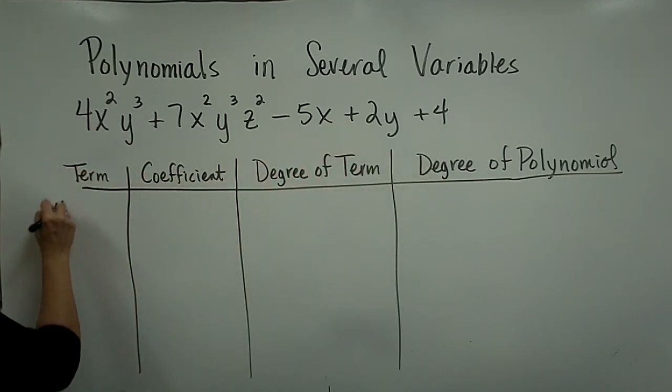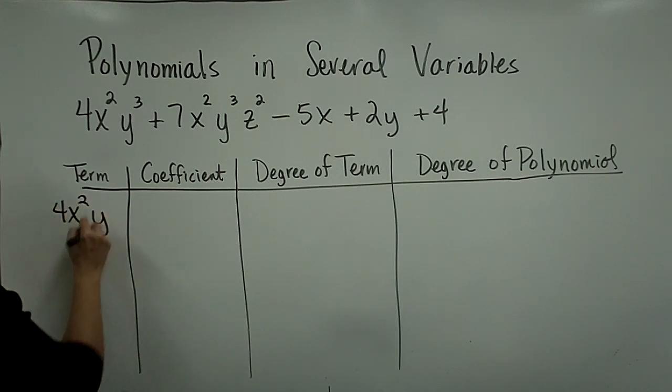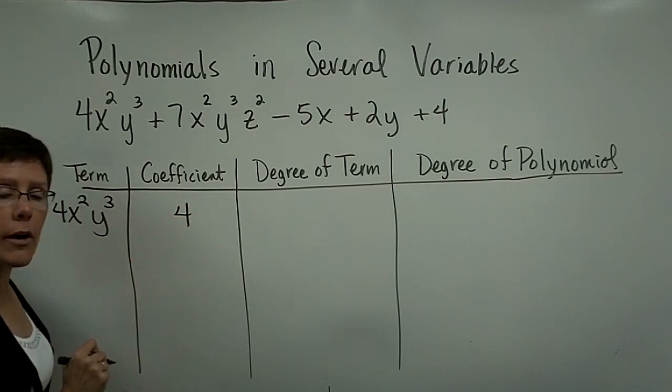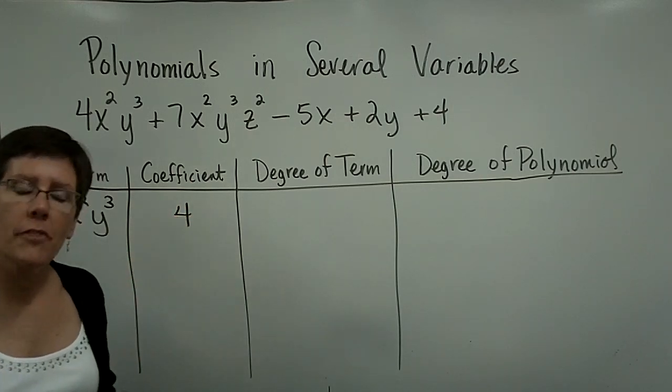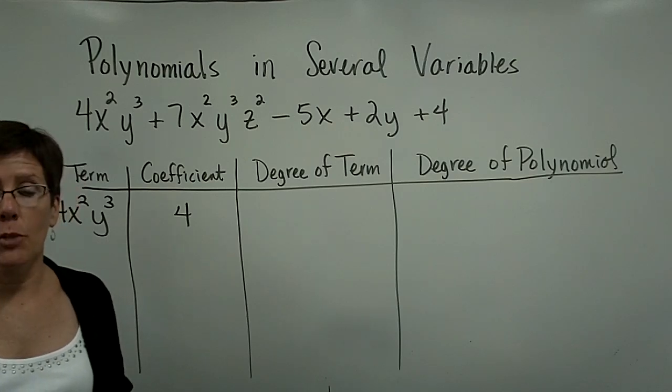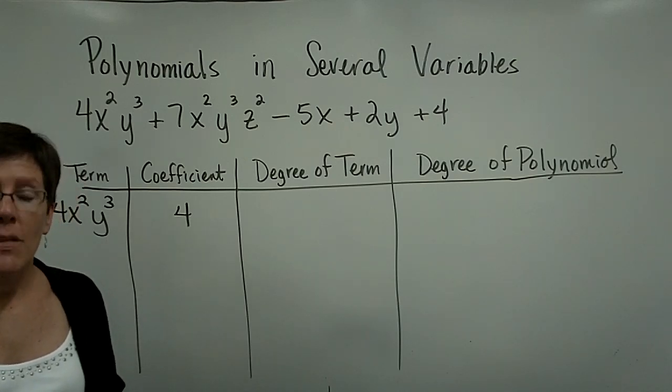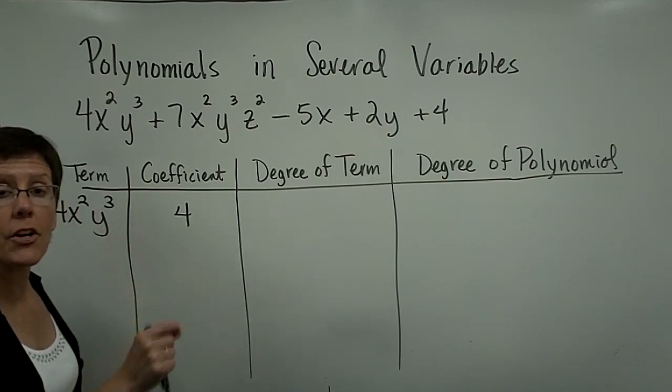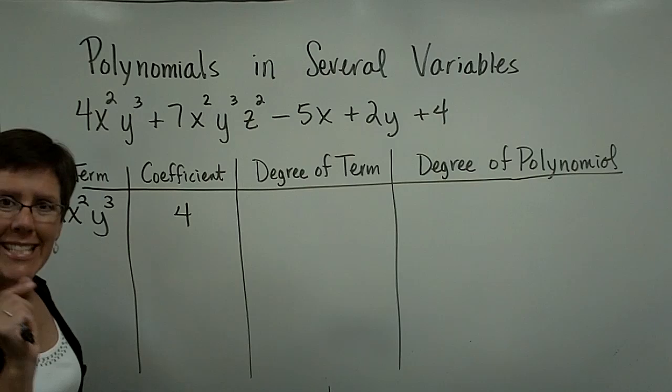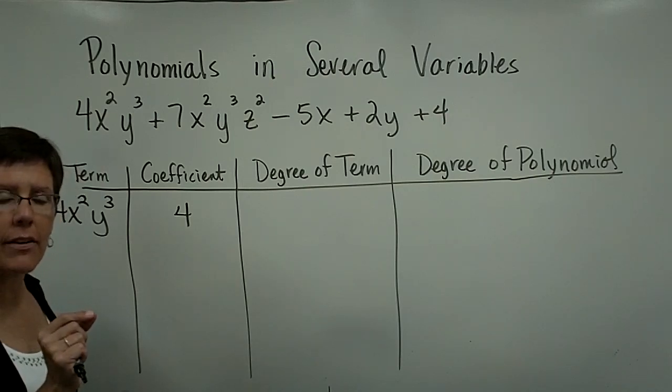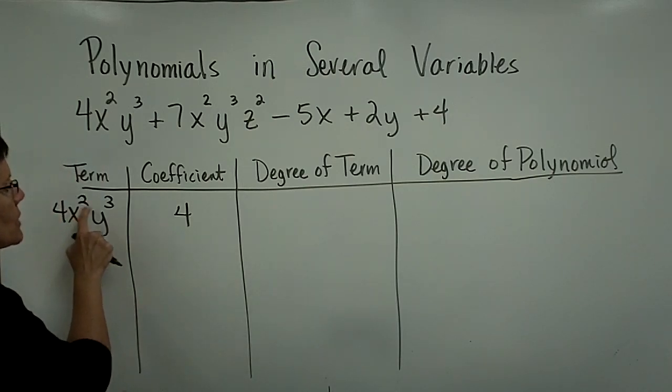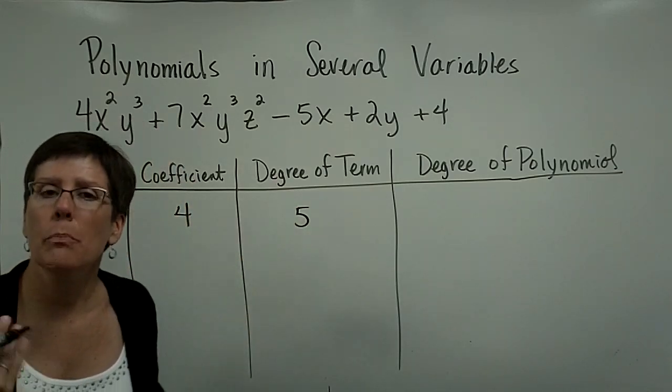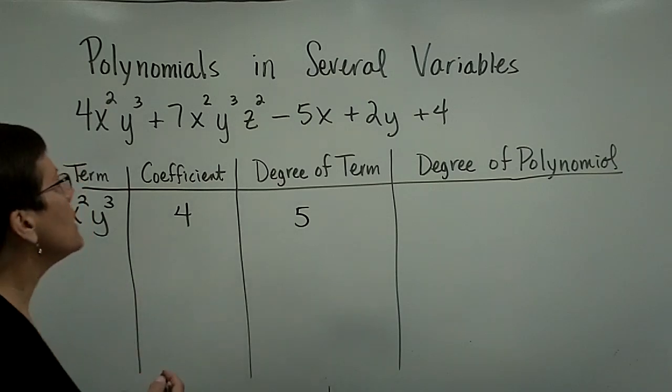The first term is 4x²y³. The coefficient of that term is a positive 4. When there are several variables in a term, the degree of the term is the sum of the exponents. It doesn't mean that you're allowed to multiply x² times y³. You are not. Their bases are not alike. You're not allowed to multiply those together. But the degree of this term is 2 plus 3 or 5. It's just describing its magnitude, if you will, and the position that you would place it in the polynomial.